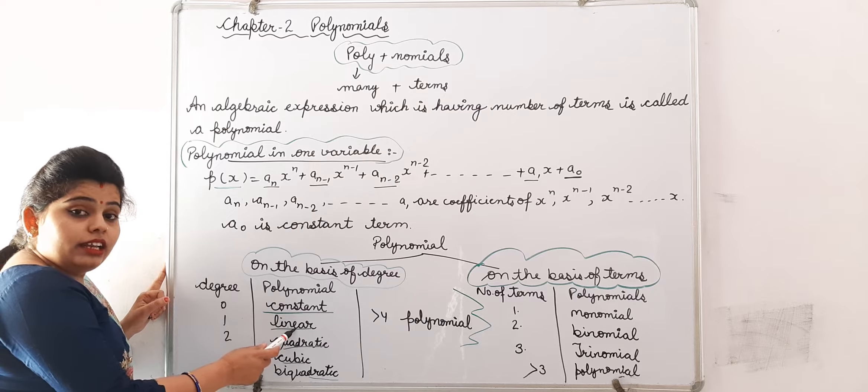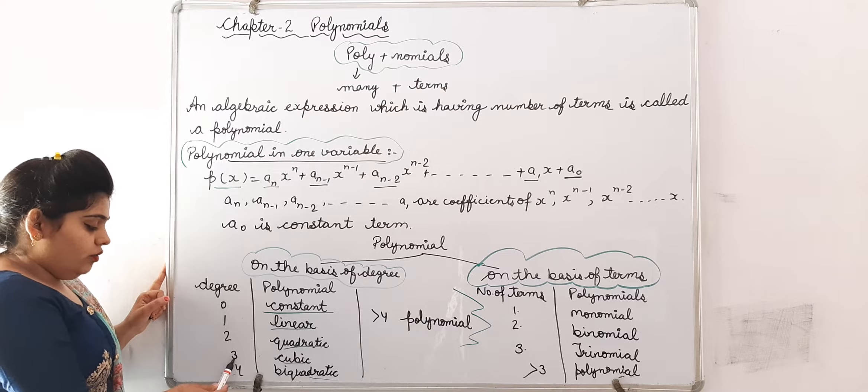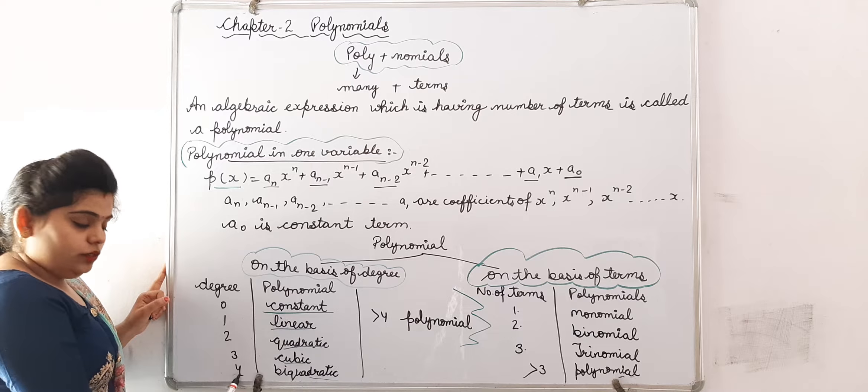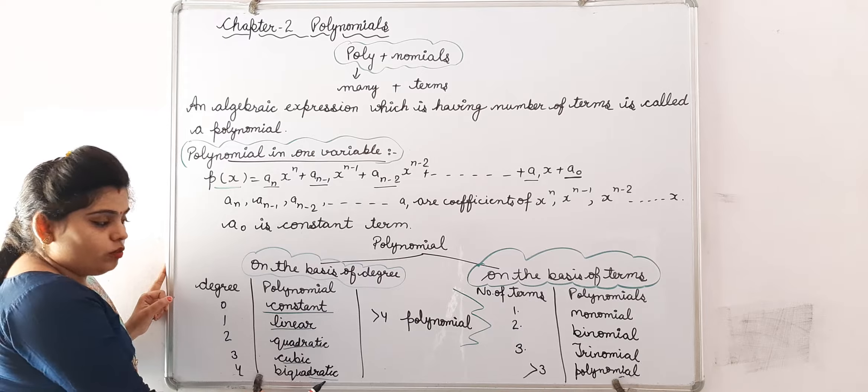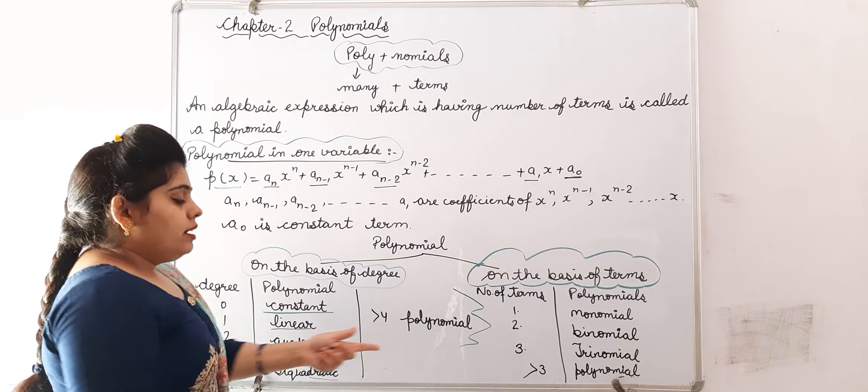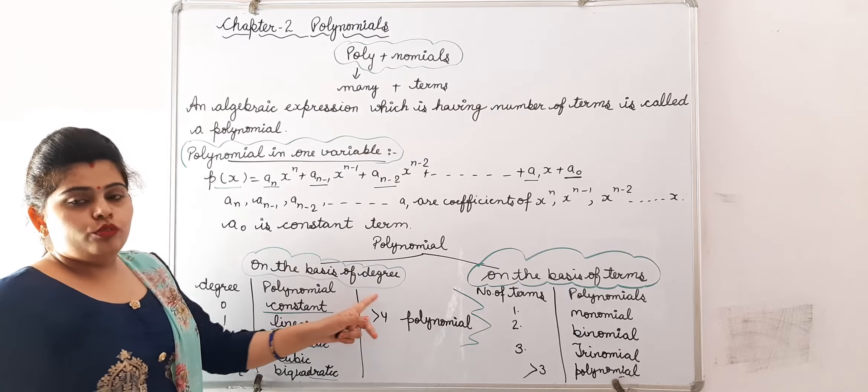If degree is 2, it is called quadratic polynomial. If degree is 3, it is called cubic polynomial. If degree is 4, then it is called bi-quadratic polynomial. And if degree is greater than 4, then it is called polynomial. This is on the basis of degree.